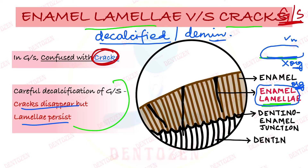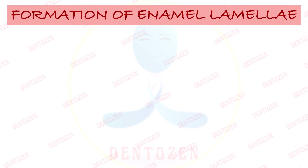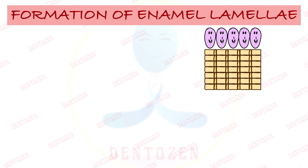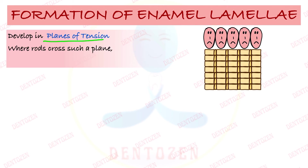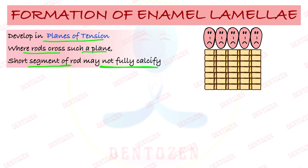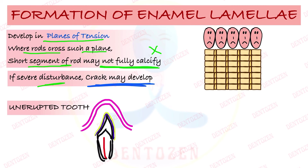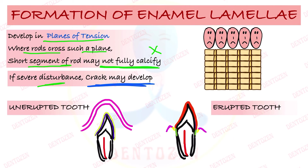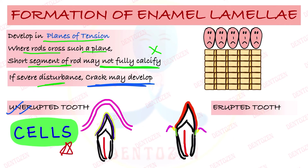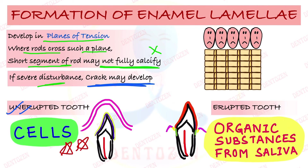In summary of formation: enamel lamellae develop in planes of tension. When rods cross such a plane, short segments may not fully calcify, forming hypocalcified or poorly calcified rod segments. If severe disturbance occurs, a crack may develop. In an unerupted tooth, the crack is filled with cells; in an erupted tooth, it is filled with organic substances from saliva.